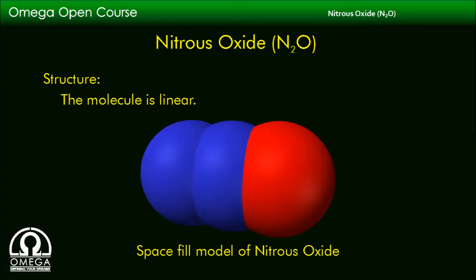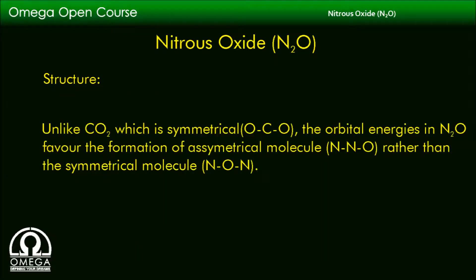Now let us discuss the molecular structure of Nitrous Oxide. As is clear from the space-filling model, the molecule is linear, as would be expected from a triatomic molecule with 16 outer shell electrons, such as azide and carbon dioxide. But unlike carbon dioxide, which is symmetrical as O-C-O, the orbital energies in N₂O favor the formation of an asymmetrical molecule as N-N-O rather than a symmetrical molecule as N-O-N.